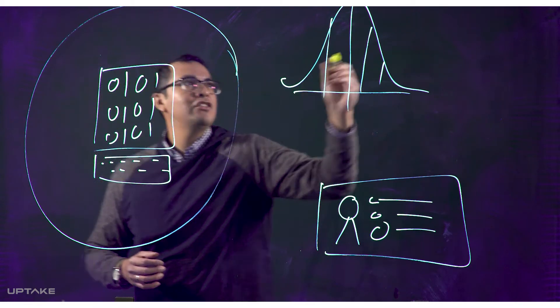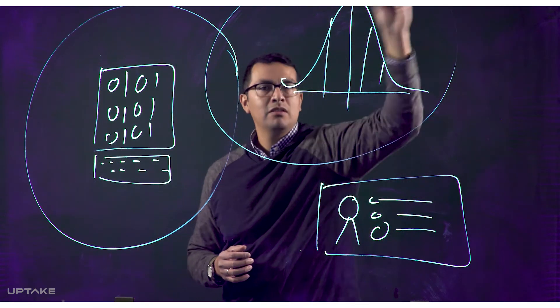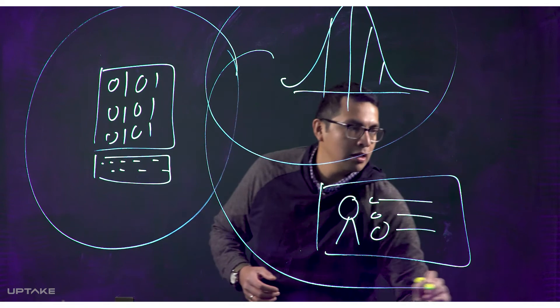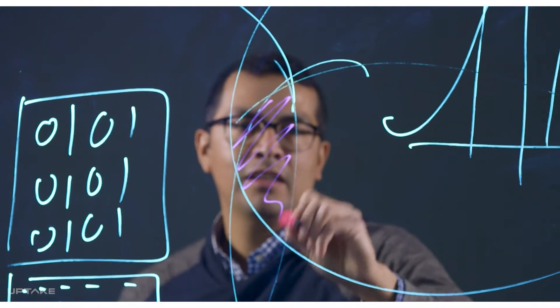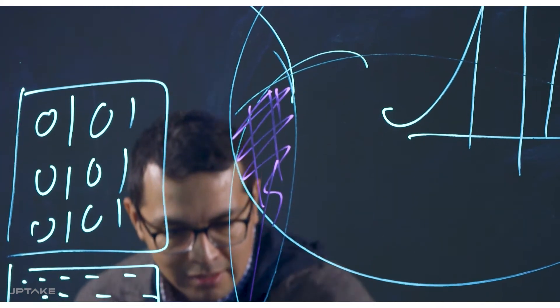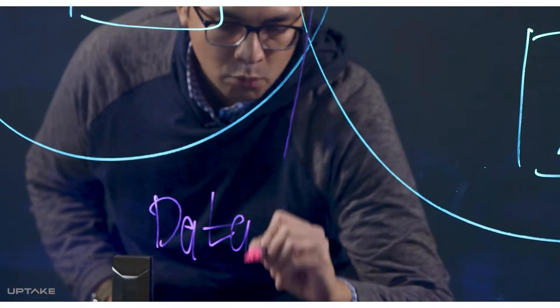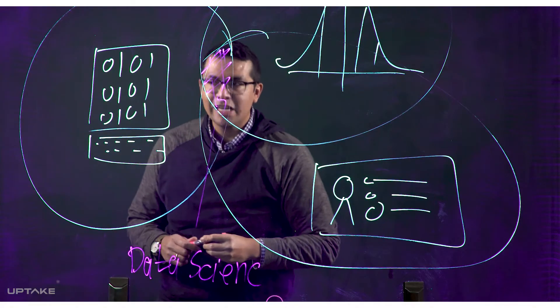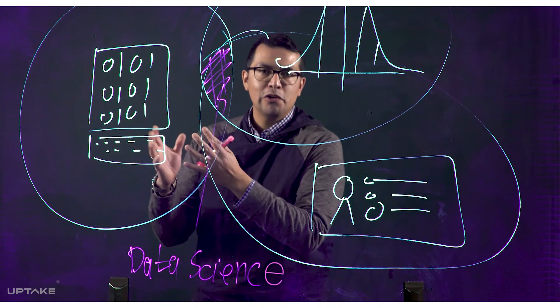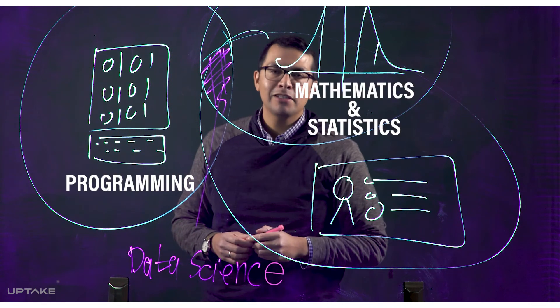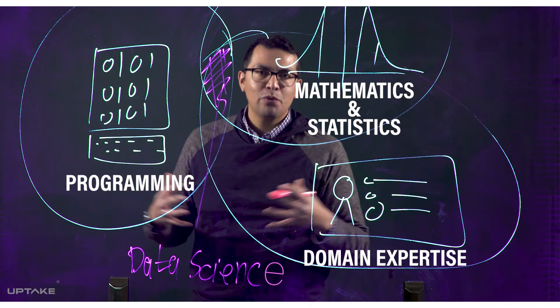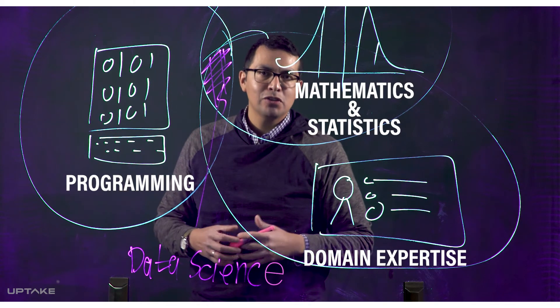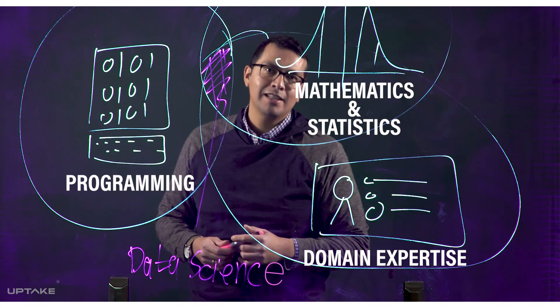And when we bring all of these disciplines together, all of these attributes together, that's when we get data science. This is where data science lives: at the intersection of programming, mathematics and statistics, and some domain expertise. Bringing these three things together allows us to deploy effective data science solutions.